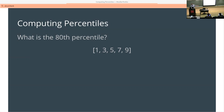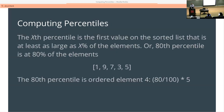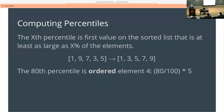What's the 80th percentile of this set of data — 1, 3, 5, 7, 9? We think about it as: the Xth percentile is the first value on the sorted list that is at least as large as X percent of the elements. The 80th percentile is at 80% of the elements, so when you put them in order, the 80th will be in position 4. The first thing you have to do is order them, and then you take the right one.